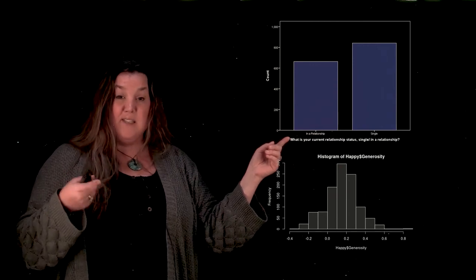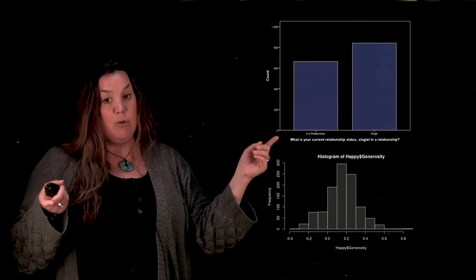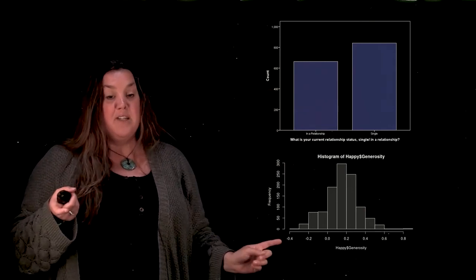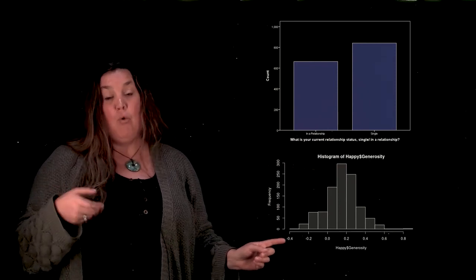For a bar graph, the x-axis is going to show you categories because it's representing categorical data. But the x-axis for a histogram is going to represent numbers because it's for quantitative data. So hopefully you will never mistake the two again — a bar graph is for categorical data, and a histogram is for quantitative data. You can see that on their x-axes. I hope that helps, and I'll see you in future videos.